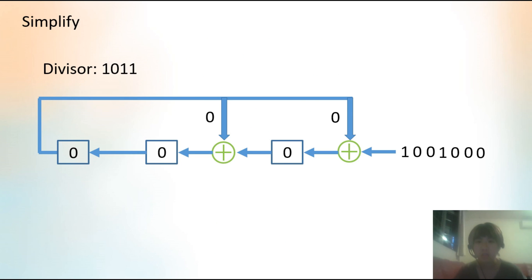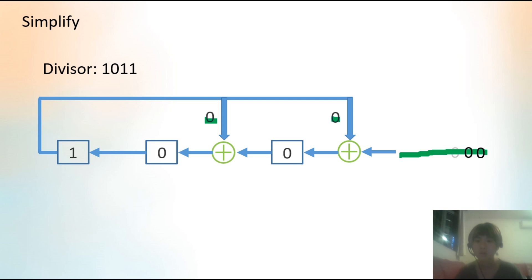So this is the simplified version from the last slide. We can see that the dividend is put in right here, and the third and the fourth bit of the divisor are right here, related to the first register. Then we start to shift the bits of the dividend into the register — the first bit, then the second, third, fourth, fifth, sixth, and the last bit. So we will have the results of the CRC division, and the remainder will be put into the registers. This is how the hardware implementation works. Thanks for watching!